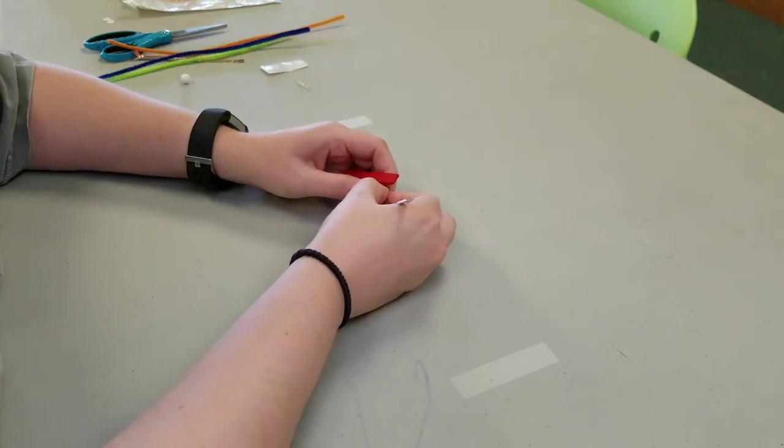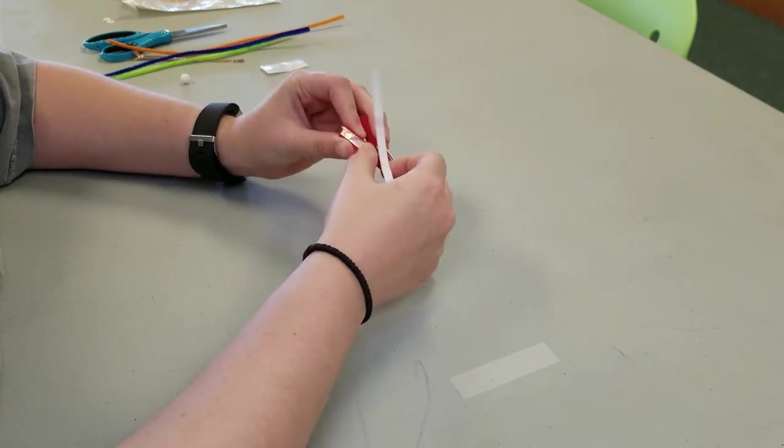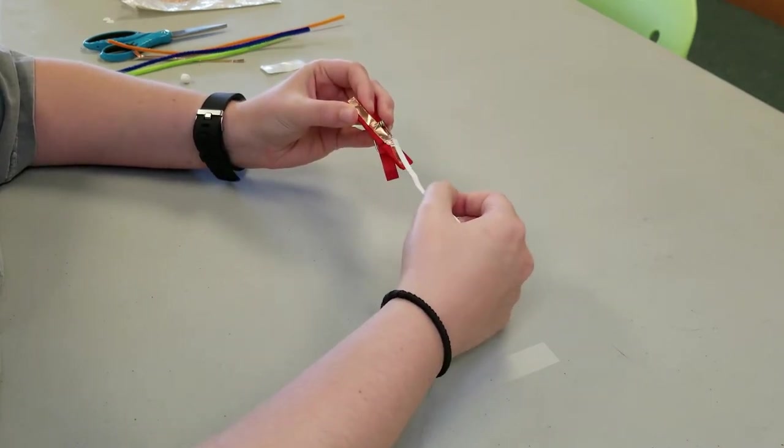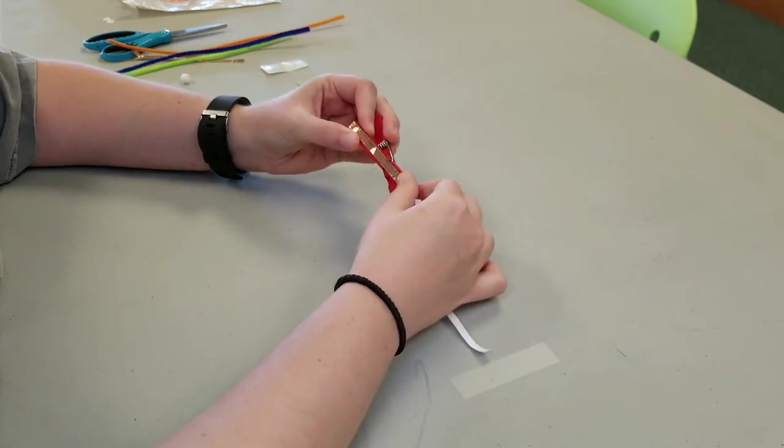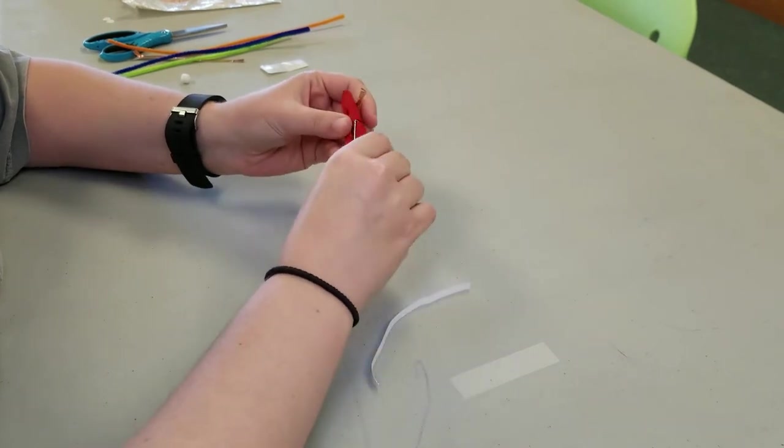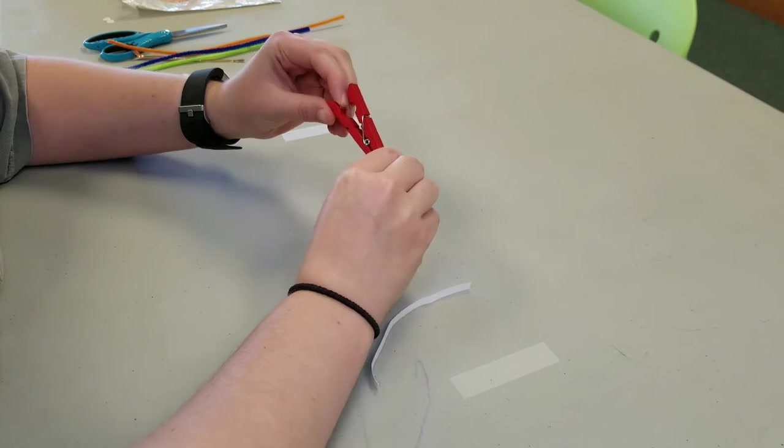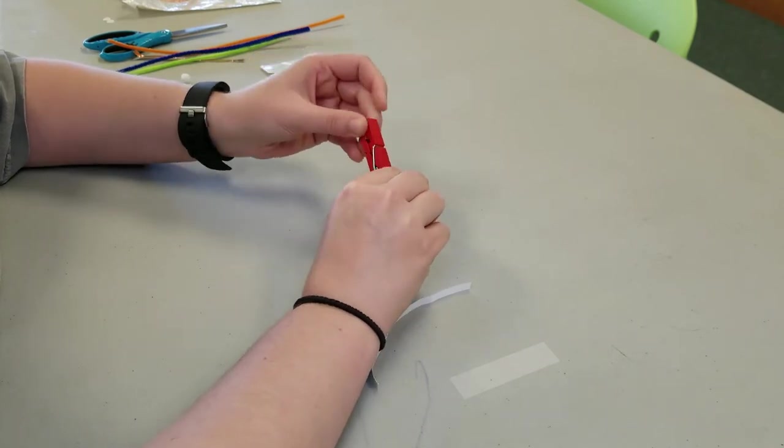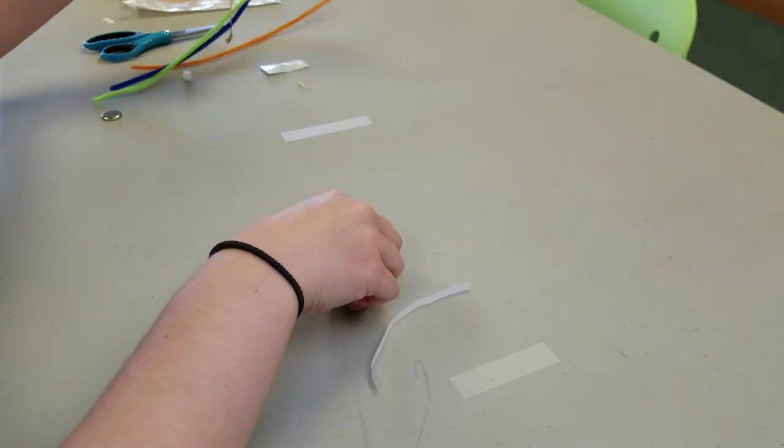The first part of the project is to peel the copper foil from its backing and start wrapping it around the clothespin. You'll start inside the back leg, wrap it around, and bring it to the front. Be sure to put it in between the teeth on the one side, and you'll repeat that for the opposite side.